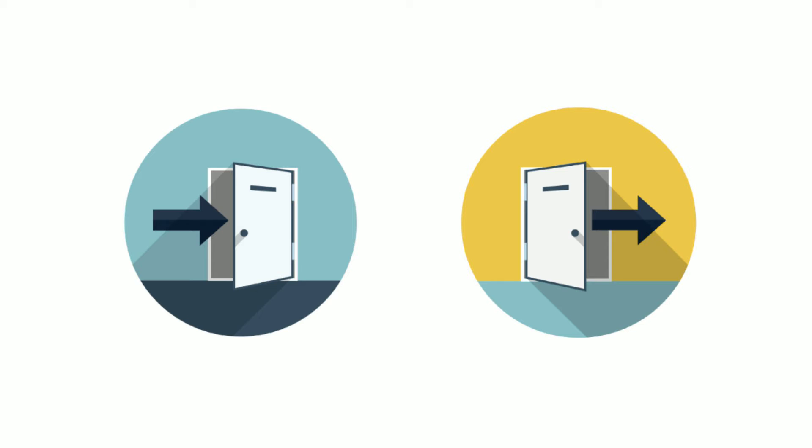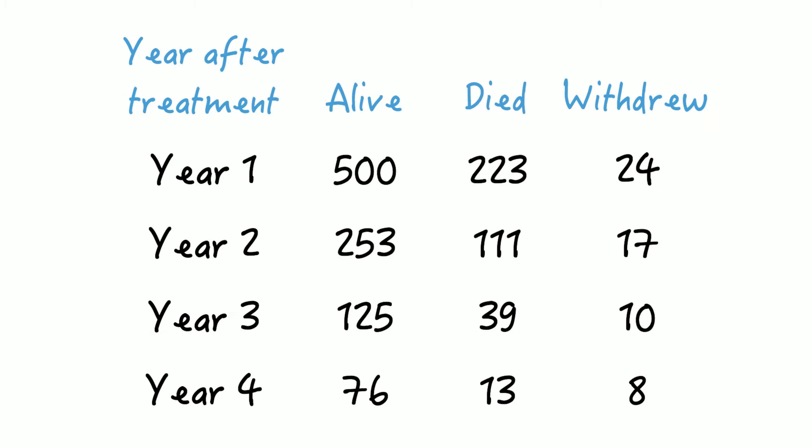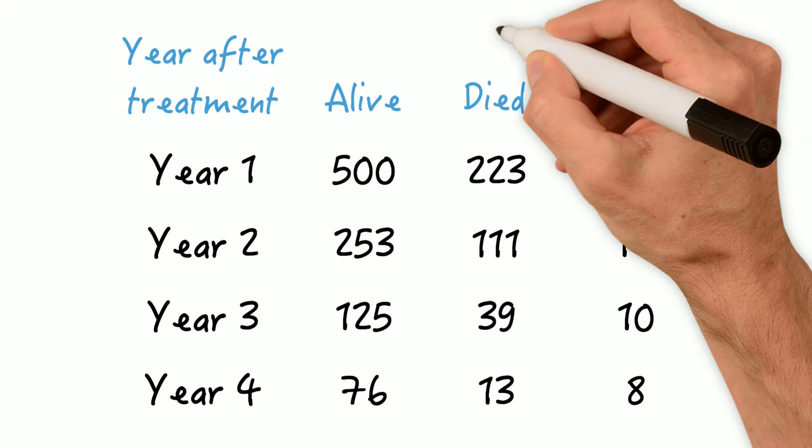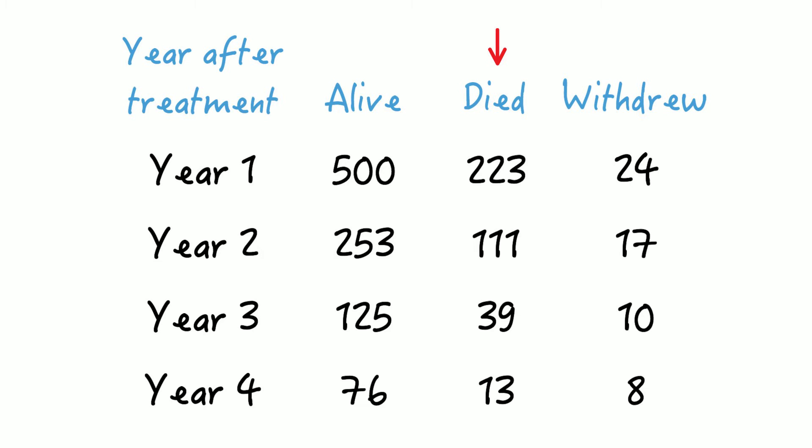Understanding this concept is super important, also for later when we're going to talk about Kaplan-Meier curves. Let's take another hypothetical study population. The study's duration is four years. The second column depicts the number of participants alive and present at the beginning of each year. The third column indicates the number of participants who died during that year, and the fourth column indicates how many participants withdrew during that year.